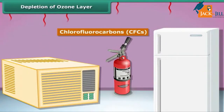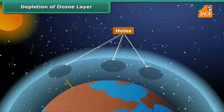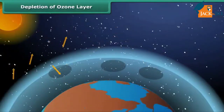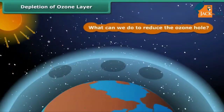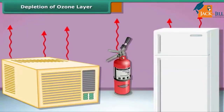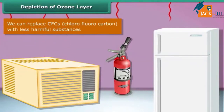Things like air conditioners, refrigerators, and fire extinguishers release chlorofluorocarbons (CFCs) into the atmosphere, creating holes in the ozone layer. CFCs are another type of air pollutant. To reduce the ozone hole, we can replace CFCs with less harmful substances to save the ozone layer from depletion.